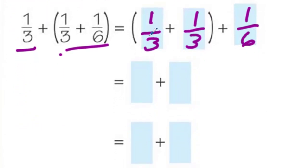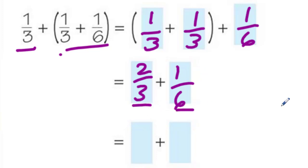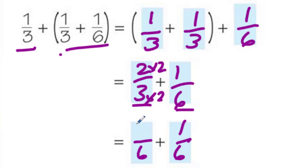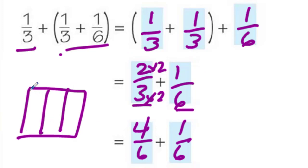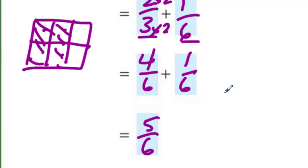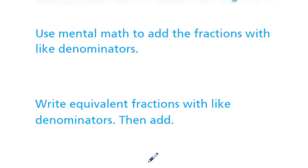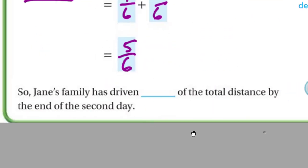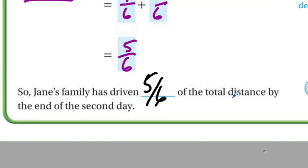I only have two squares, so I can do it in parentheses first. One-third plus one-third is two-thirds. Then I add on my one-sixth. Now that I have two-thirds and one-sixth, I need to find that common denominator. Three will go into six, so six seems like a great denominator. The one-sixth doesn't change — it already has a denominator of six. But two-thirds does not. To get six, I multiply the denominator by two, so I multiply the top by two as well. Now I have four-sixths, which is the same as two-thirds. Four-sixths plus one-sixth equals five-sixths. So Jane's family has driven five-sixths of the total distance by the end of the day.